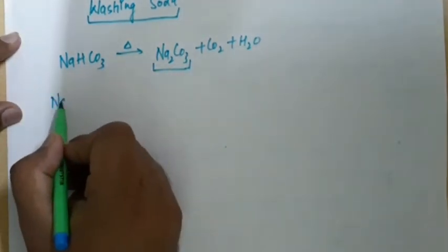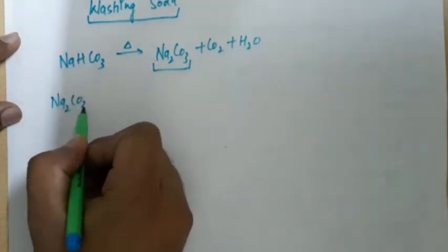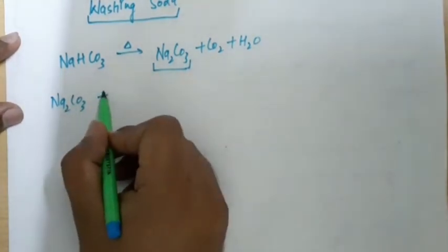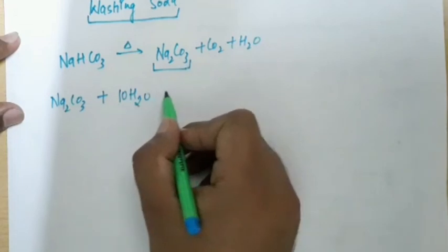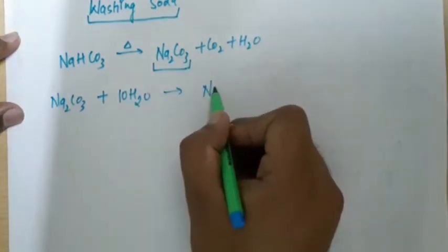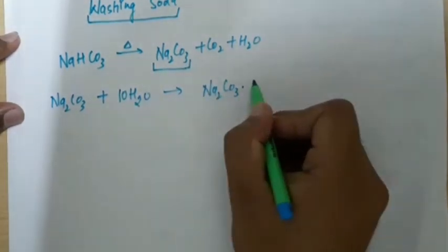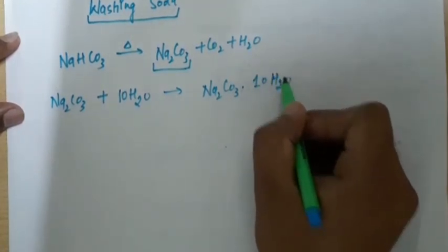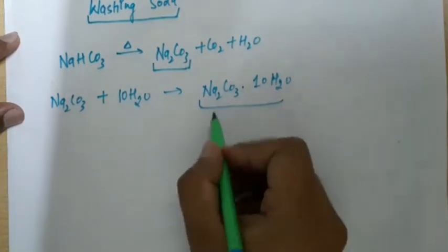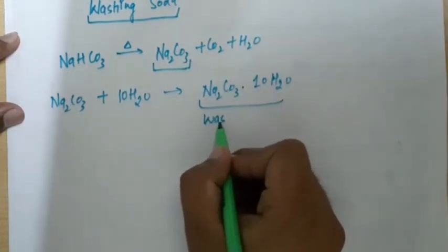What happens? This Na2CO3 that is sodium carbonate when treated with 10 molecules of water, it forms sodium carbonate dot decahydrate. It is actually washing soda.